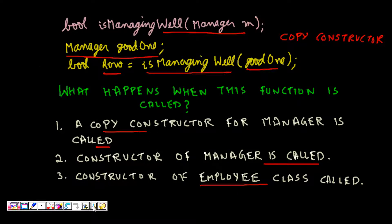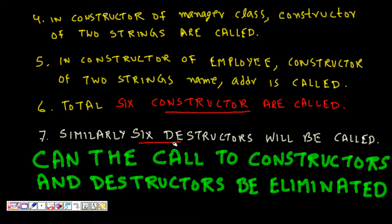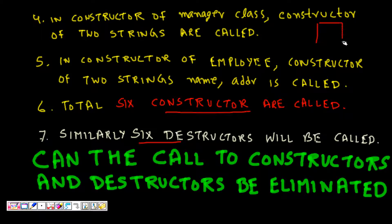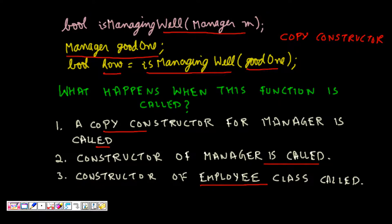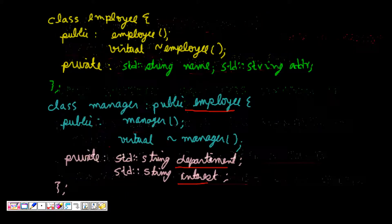When 'is_managing_well' returns, correspondingly six destructors will be called. That is quite a costly affair. If a class is derived, then the base class constructors are also getting called. Besides the cost of all these constructor/destructor calls, you are also putting many things on the stack, which is a constrained memory space. So the two problems are: one, the calling of many constructors and destructors, and two, a lot of stack space being consumed.